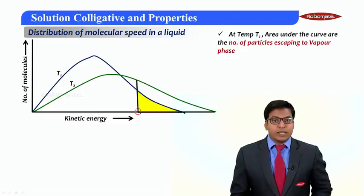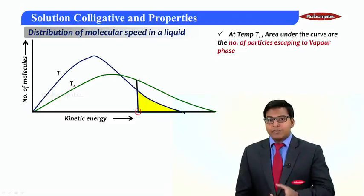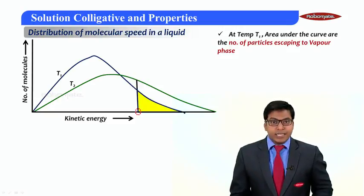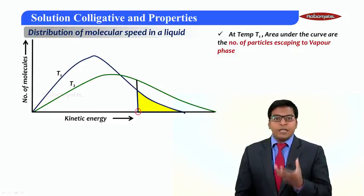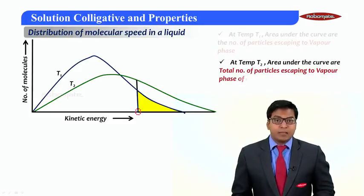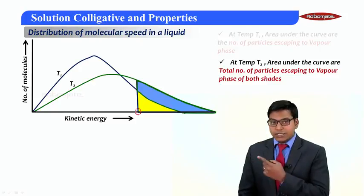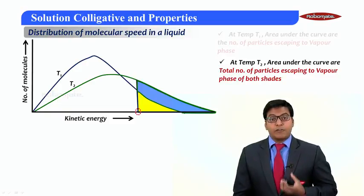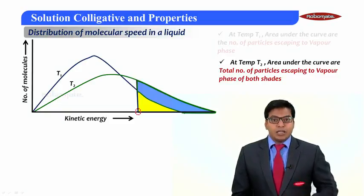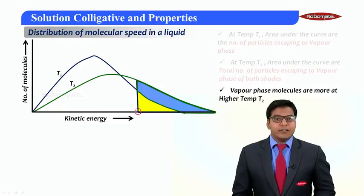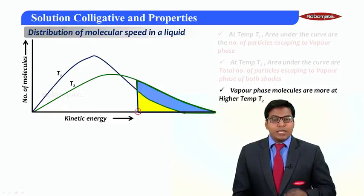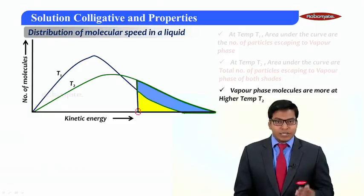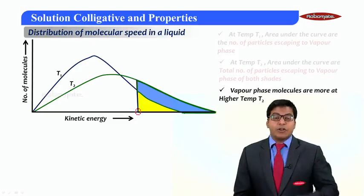At temperature T1, the area under the curve represents the number of particles escaping to the vapor phase. That yellow colored area shows how many particles have escaped at temperature T1. Similarly, at temperature T2, the blue color shaded part as well as the yellow part combined are the total number of particles escaping. It is very clear that vapor phase molecules are more at higher temperature. As the temperature increases, vapor pressure will also increase.